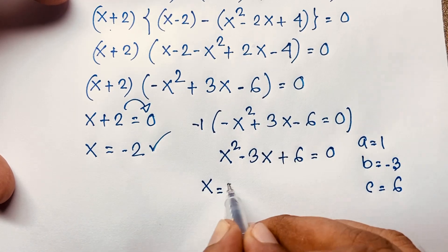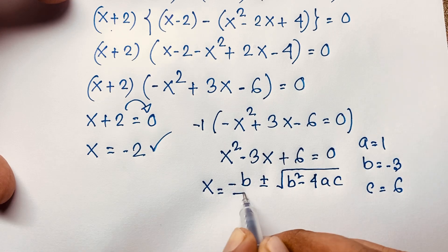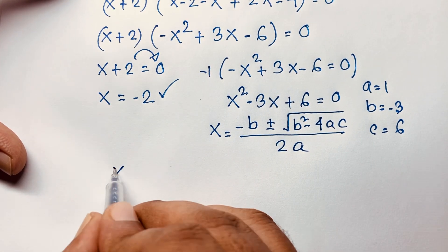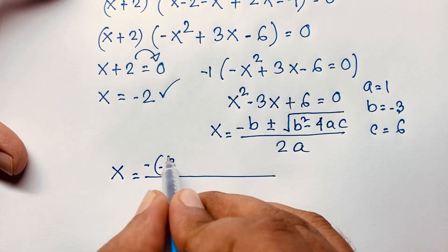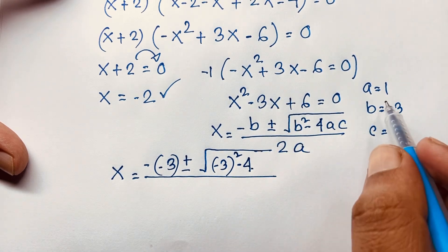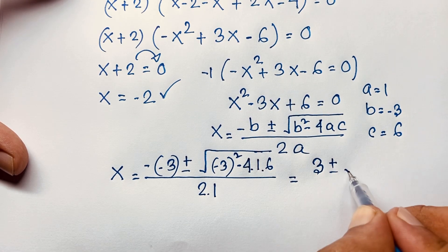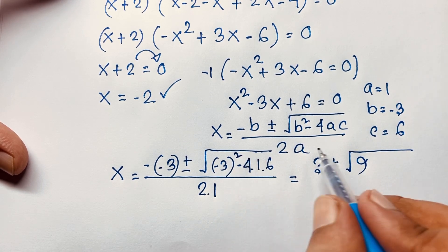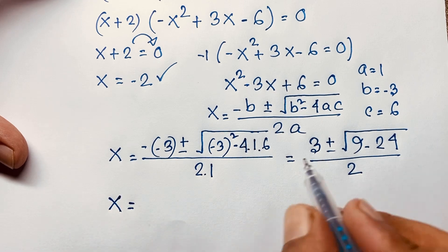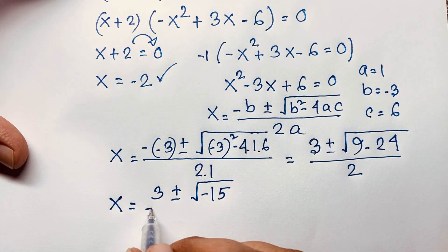Applying the quadratic formula: x equals negative b plus or minus square root of b squared minus 4ac, all over 2a. With b equal to negative 3, we get x equals 3 plus or minus square root of negative 3 squared minus 4 times 1 times 6, over 2 times 1. This simplifies to 3 plus or minus square root of 9 minus 24 over 2.